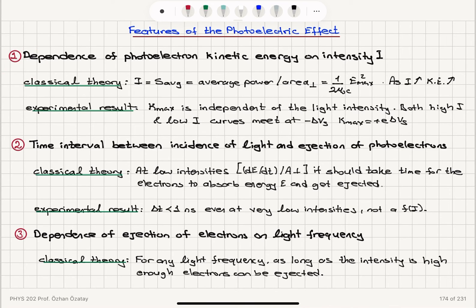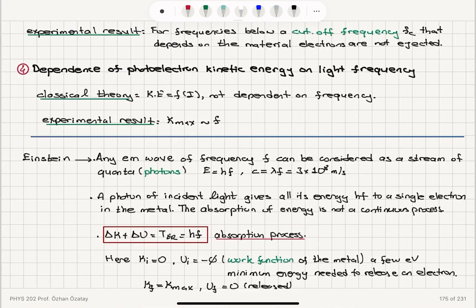Kmax is independent of light intensity, whereas classical theory suggests kinetic energy should increase with intensity. The second property is that the ejection time is independent of intensity — it is very short. The third property is that ejection depends on light frequency: below a cutoff frequency electrons are not ejected, contrary to classical theory which predicts ejection whenever intensity is sufficient. Fourth, photoelectron kinetic energy depends on light frequency experimentally, but classically it should depend only on intensity.